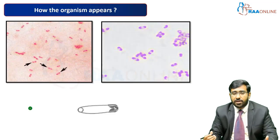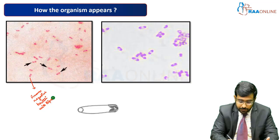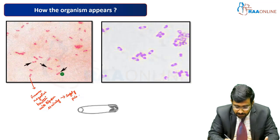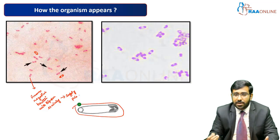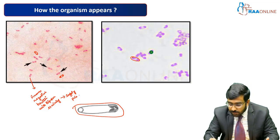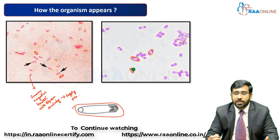Moving on to the appearance of the organism: it is a gram-negative bacillus with bipolar staining, which causes it to appear as a safety pin appearance. As you can see in the image I have drawn, you will be able to see the bacillus with the bipolar staining at both ends, giving it that characteristic safety pin appearance.